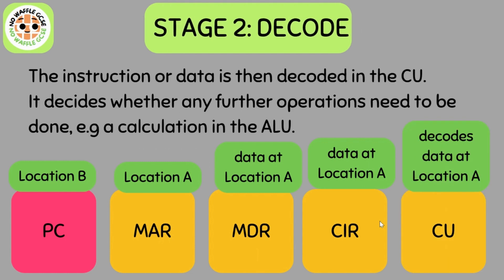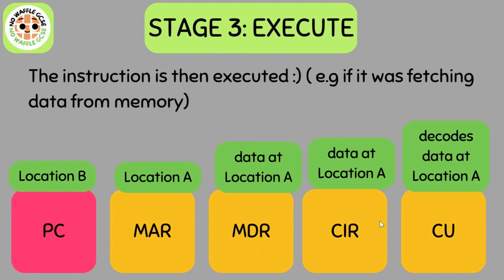This leads to stage two, the Decode stage. The instruction or data is decoded in the Control Unit, which then decides whether any further operations are needed — for example, if you wanted to calculate something. Finally, the last stage is the Execute stage, where the instruction is executed — whether that's fetching data, performing calculations, or whatever the task is, it is then carried out.